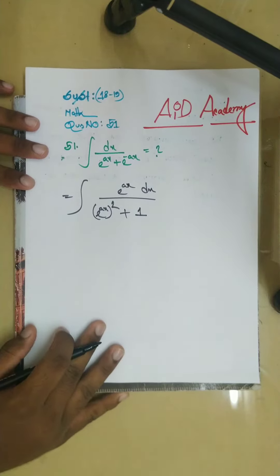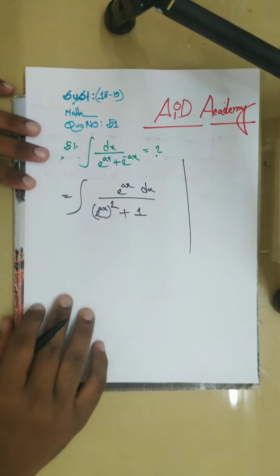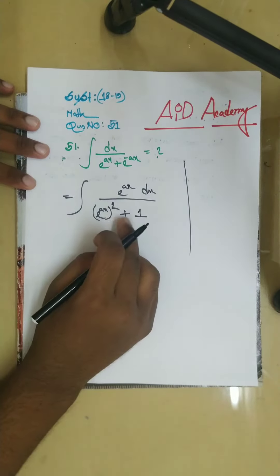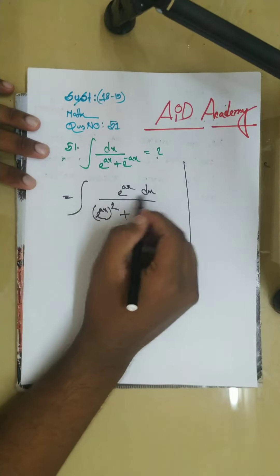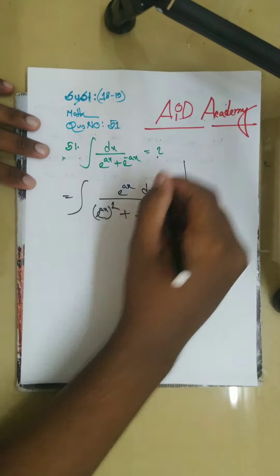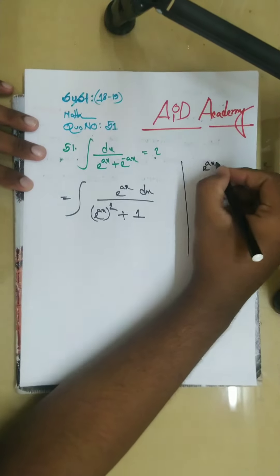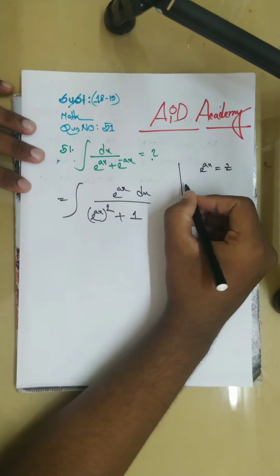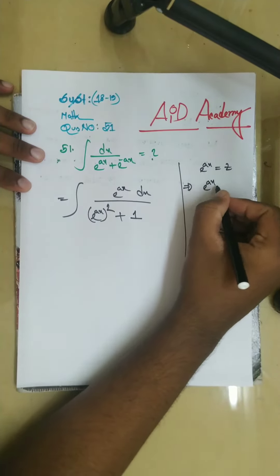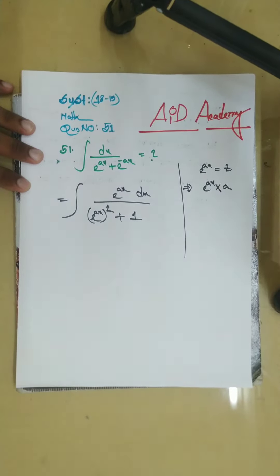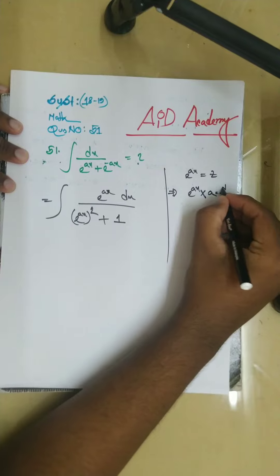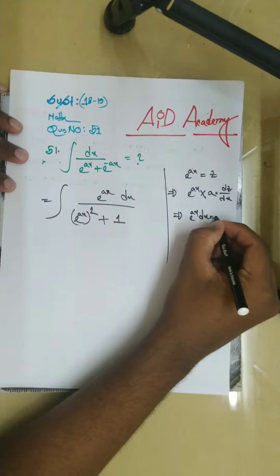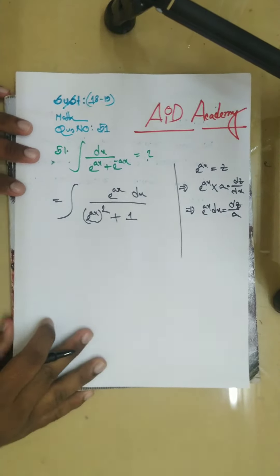Then we will see that z is equal to e to the power ax. The function is z equals e to the power ax. So dz by dx equals a times e to the power ax, and therefore e to the power ax dx equals dz by a.